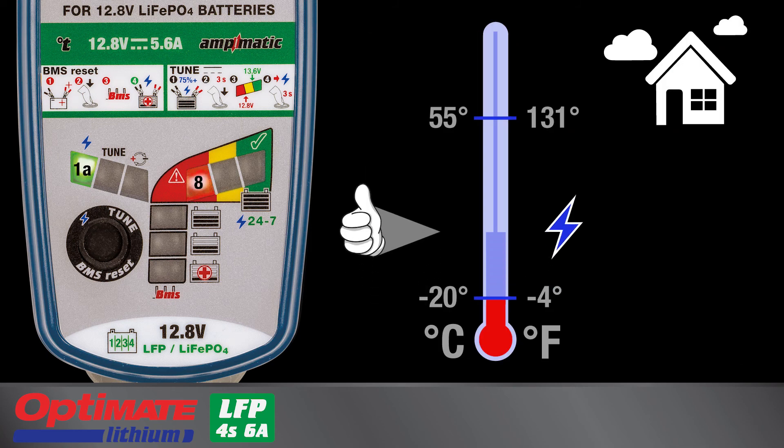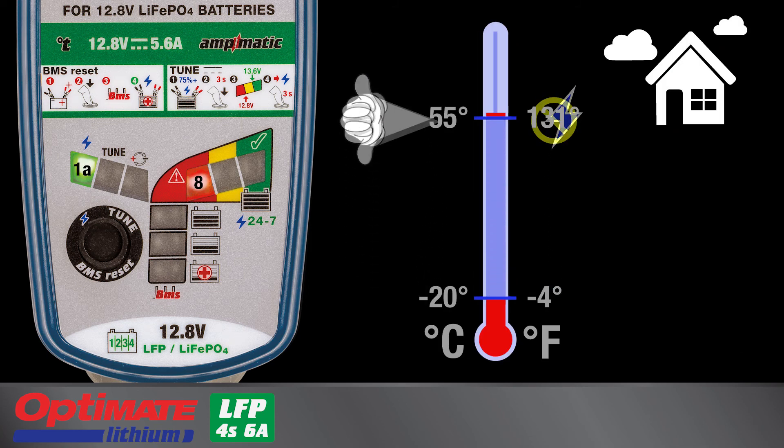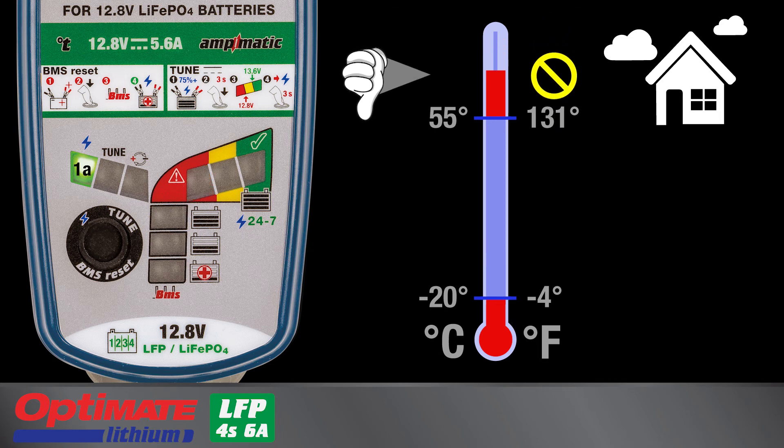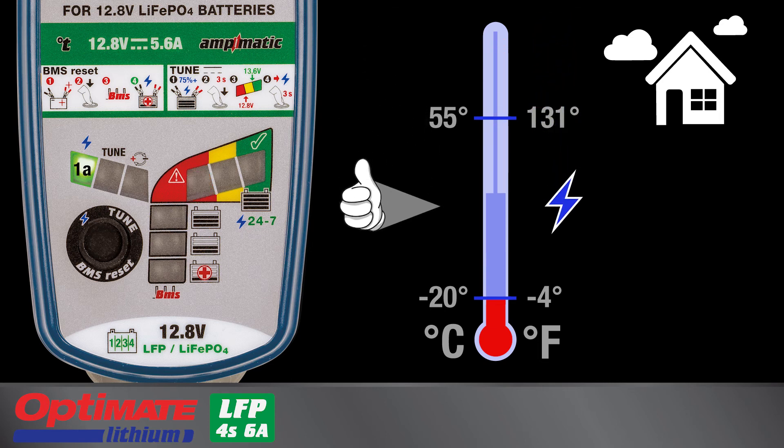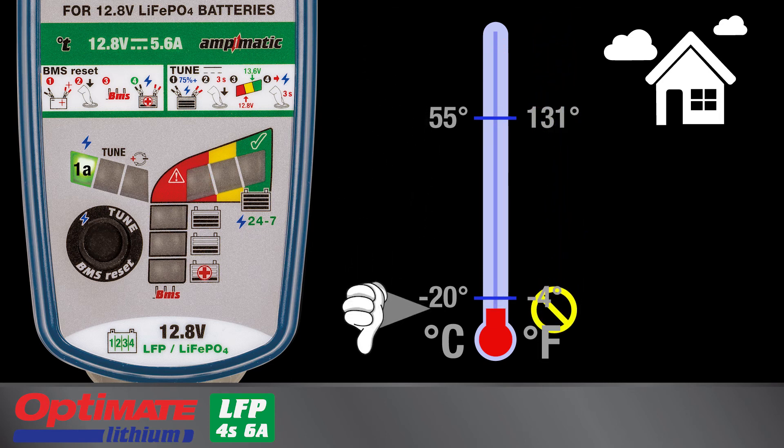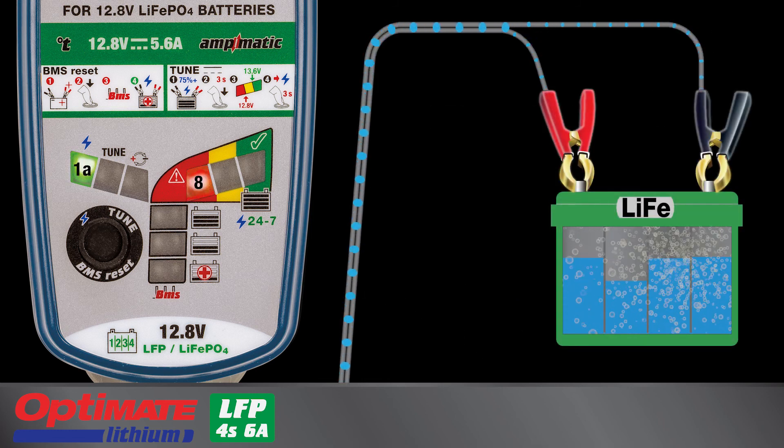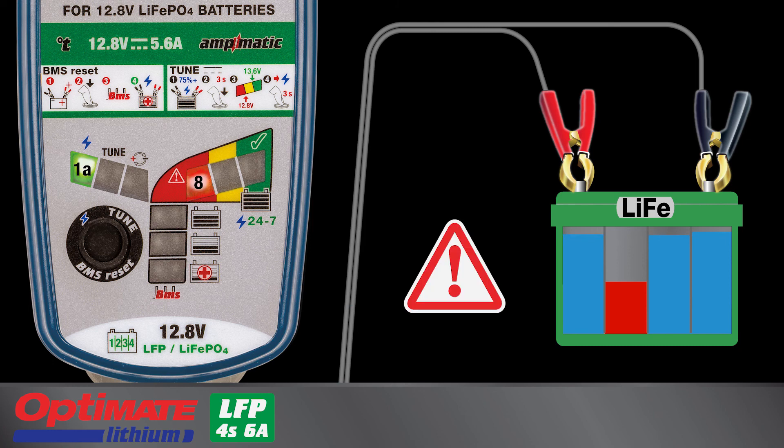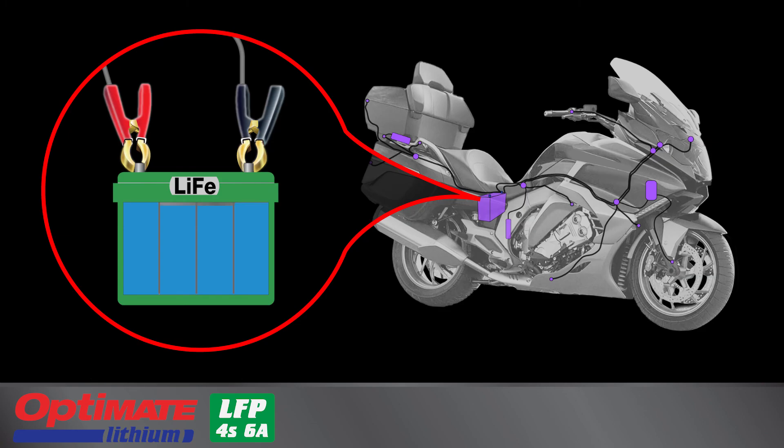Lamp 8 blinks rapidly and charging is interrupted if the ambient temperature is outside of the safe charging temperature range for LFP batteries. Lamp 8 blinks also if during save mode the charger detected a fault within the battery or could not hold sufficient charge during the final test or perhaps the current draw from the vehicle is higher than the charger can deliver.